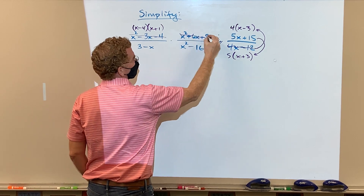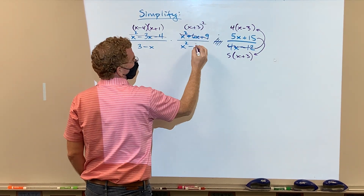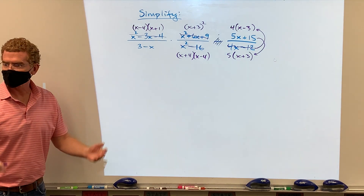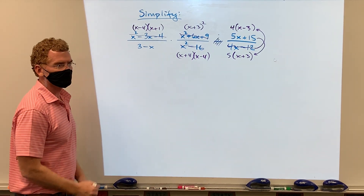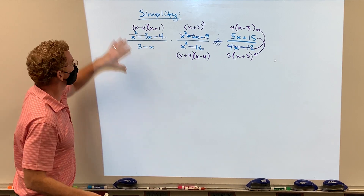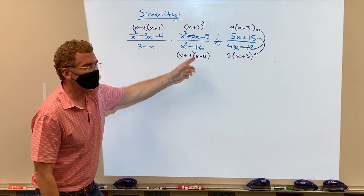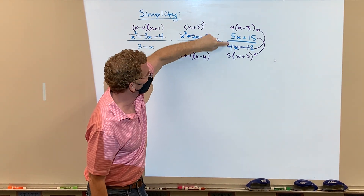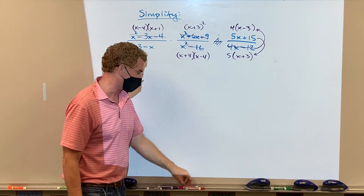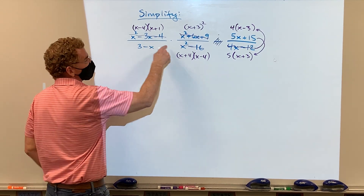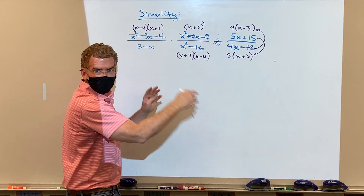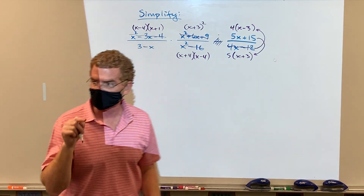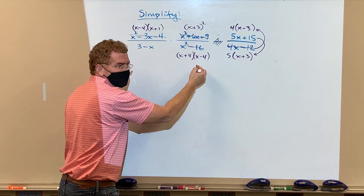This factors into x minus 4 times x plus 1, that's 3 minus x, that's x plus 3 squared, and that's x plus 4 times x minus 4. Now that it's all multiplication, what do you do? Cancel — because it's a bunch of factors. There are pluses and minuses joining the terms, but that just means the factors are binomials and monomials mixed in. I can only cancel like this because I'm multiplying, not adding.